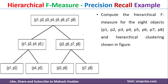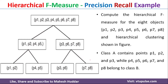In this case, we have been given 8 objects, that is P1 to P8. Initially, all 8 objects are present in cluster 1. Later, they were divided into 2 clusters, and these 2 clusters were in turn divided into 4 more clusters. Also, class A contains P1, P2, P3, and the remaining 5 objects are present in class B.